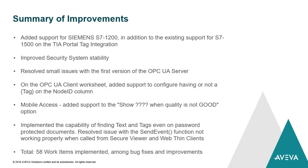Some highlights of the other improvements: we had a total of 58 work items. On our already existing tag integration for Siemens S7-1500, which is the integration for TIA Portal, we now support also the S7-1200. On the security system, we made several improvements on stability — we were getting reports from customers with issues on the security system, and we made it much more robust on this version.